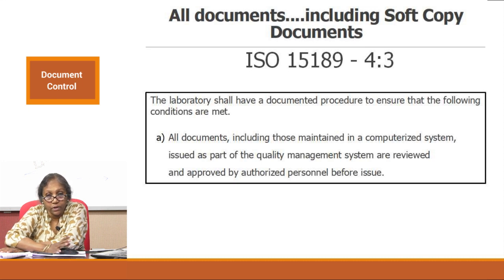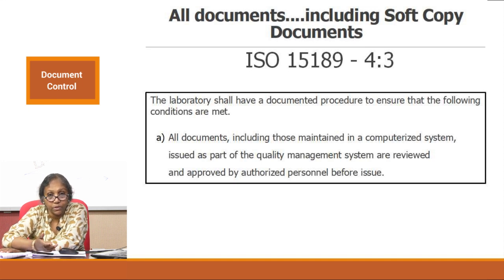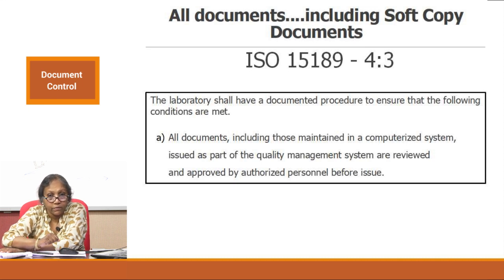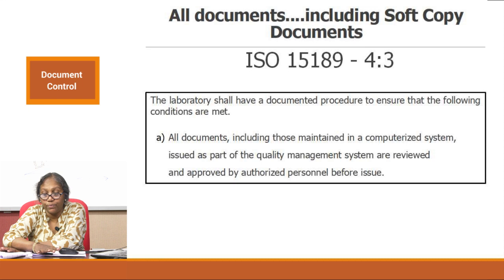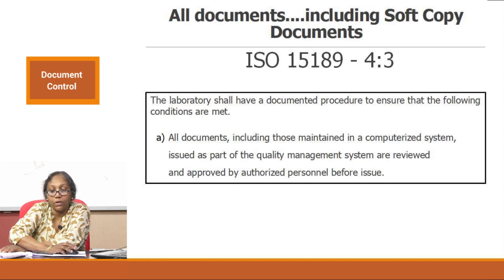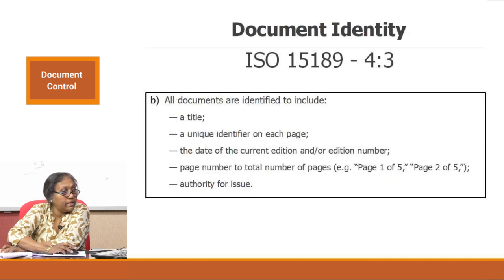Regardless of whether your system is manual or if you are holding all your documents in the computer - many labs do that these days to have paper-saving mechanisms - all your electronic documents will also be under the document control process. That is sub clause A. Sub clause B talks about your document identity.